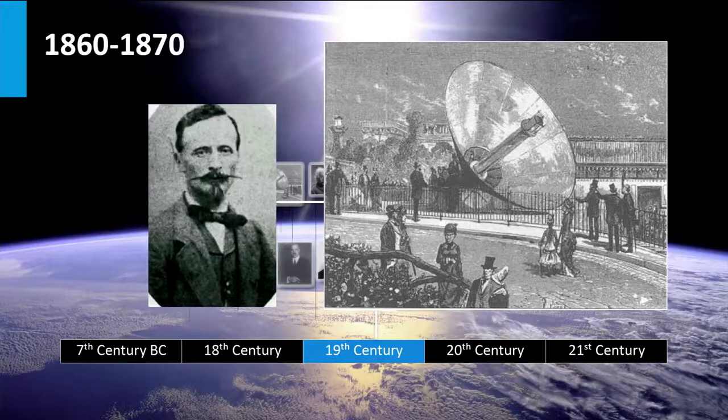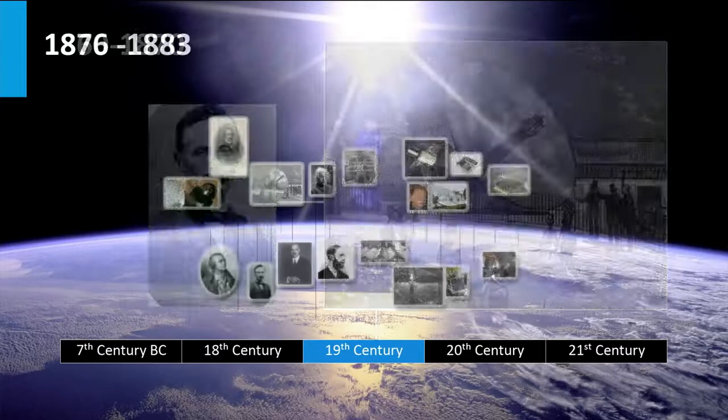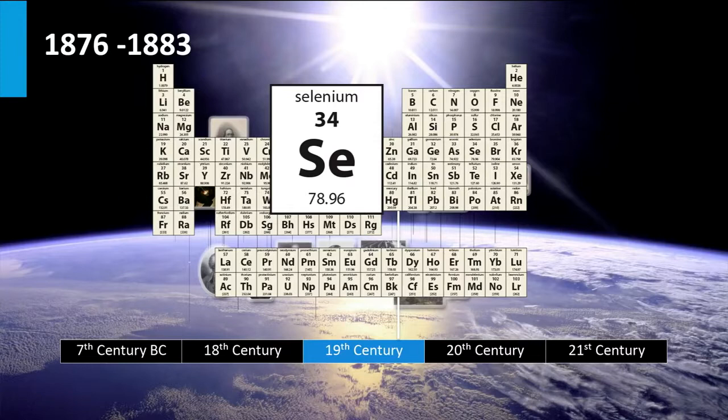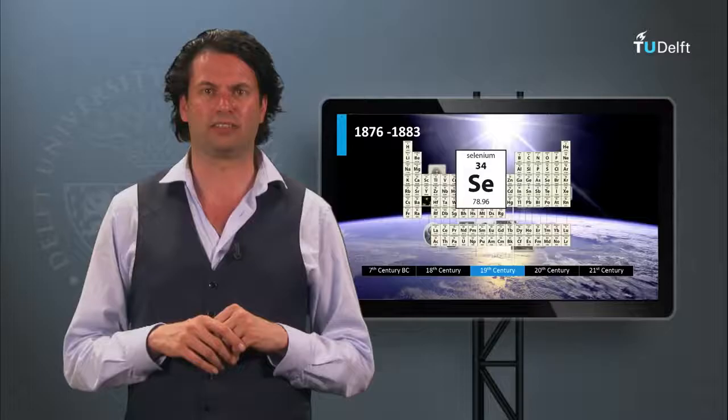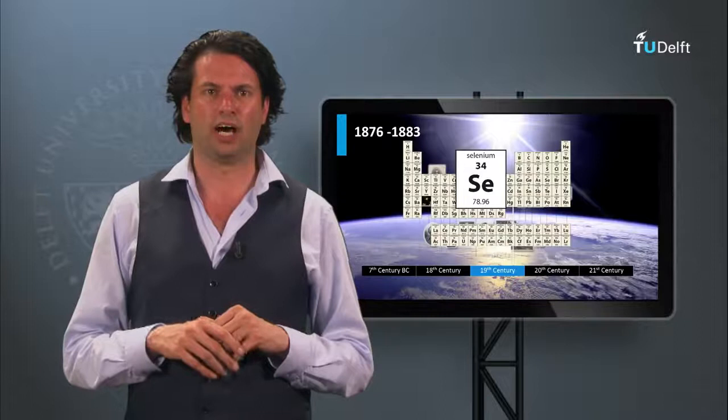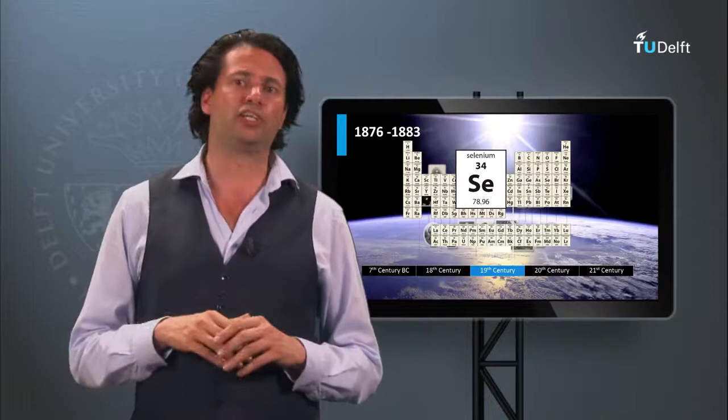William Grylls Adams and Richard Evans demonstrated in 1876 that a junction based on platinum and the semiconductor selenium shows the photovoltaic effect. However, the performance of the device was too poor. Seven years later, Charles Fritz managed to make a PV device based on a gold-selenium junction, with a light-to-electricity conversion efficiency of 1%.